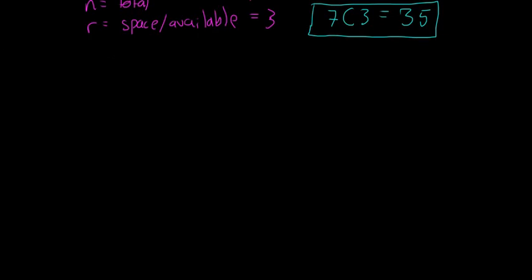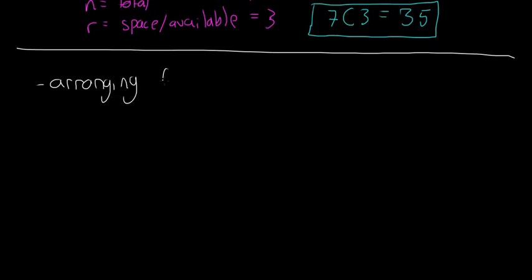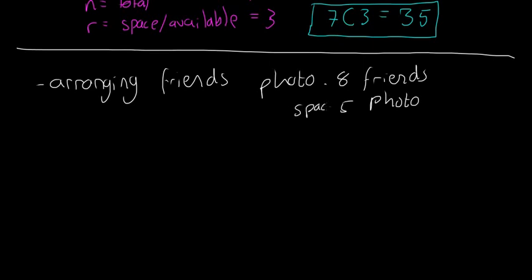I'll give one more example just in case that wasn't clear. Arranging friends for a photo - sometimes they won't explicitly say 'arrange' in the question, but we'll just imagine they do. There are eight friends, but there's only space for five in the photo. Since we're arranging, we would say 8P5. If we stick that into our calculator, we'd find that there are 6,720 different arrangements.